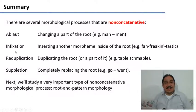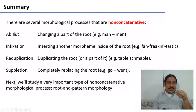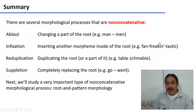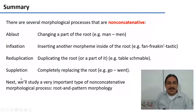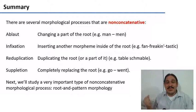In summary, there are several morphological processes that are non-concatenative, where the root suffers some process beyond just sticking something next to it. In an ablaut, you change a part of the root, like going from 'man' to 'men'. In infixation, you insert a morpheme right inside the root, like 'fan-freaking-tastic'. In reduplication, you duplicate the root or part of it, as in 'table schmable'. And in suppletion, you completely replace a root, like 'go' and 'went'. In the next video, we're going to study another non-concatenative process: root and pattern morphology.